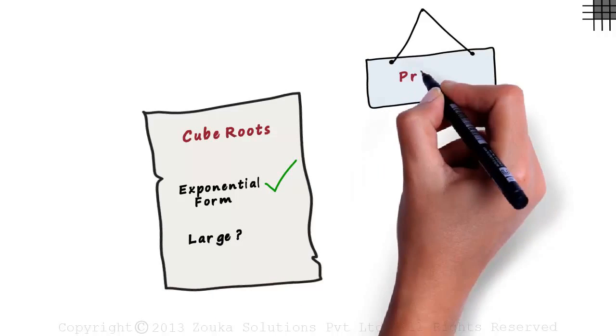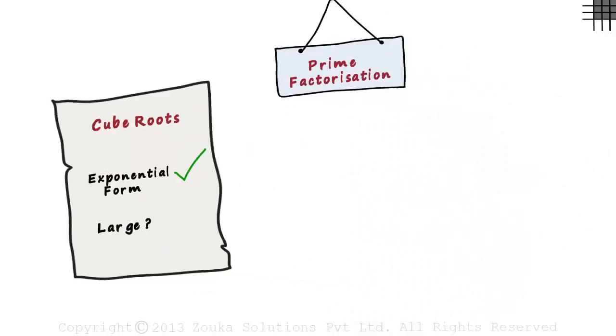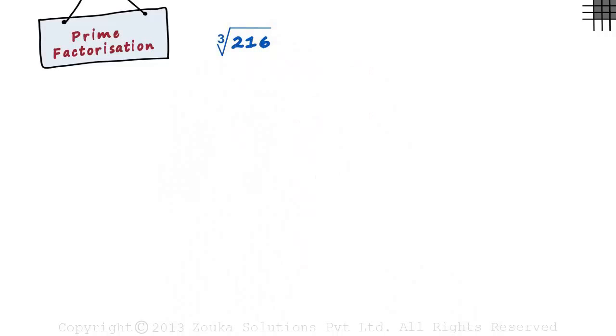Well, we use the prime factorization method. Say we want to find the cube root of 216. Our aim is to reduce this number to its prime factors.